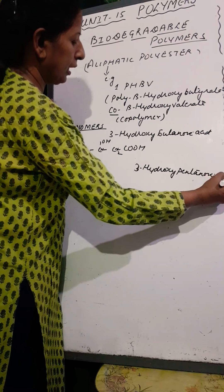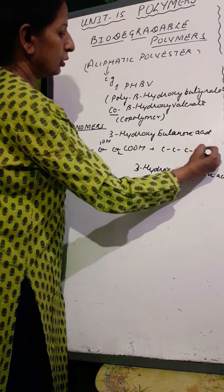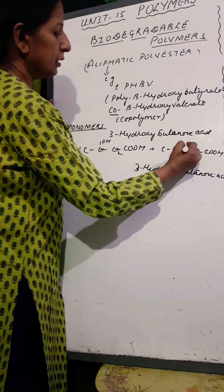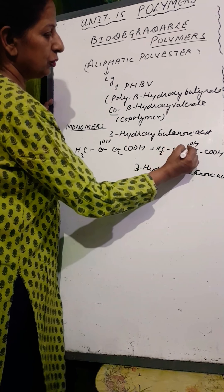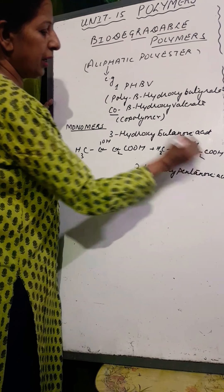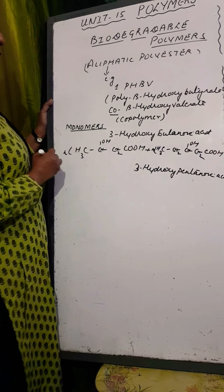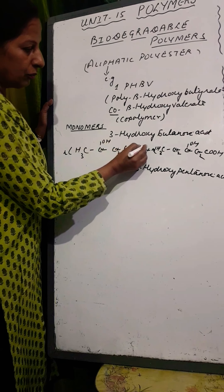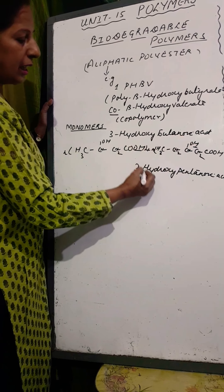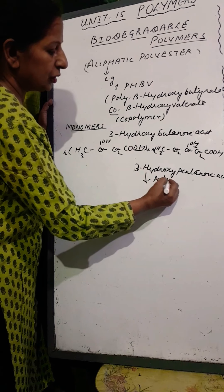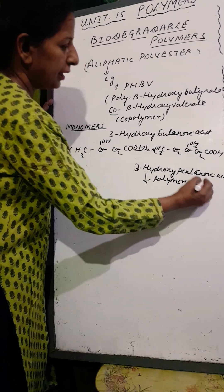The other monomer is 3-hydroxyvaleric acid, which has 5 carbon atoms - this is pentanoic (valeric) acid with an OH group at position 3. Complete the hydrogens. N units of the first monomer polymerize with N units of the second monomer. The OH from one and H from the other are eliminated in condensation polymerization.